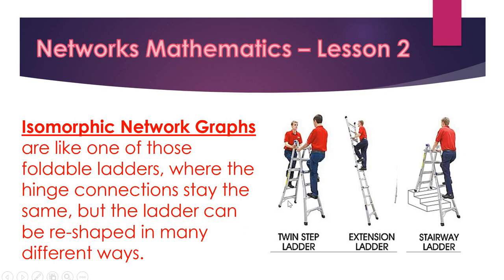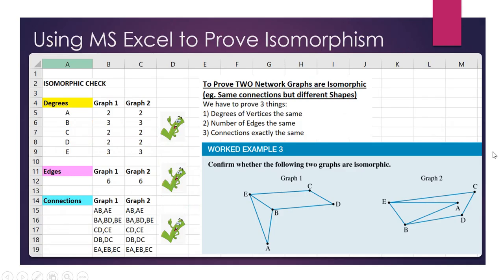Isomorphic graphs are like those foldable ladders you see — you can change the configuration. The hinge points and connections on the ladder all stay the same; you can put it up as a stepladder, flip the top up as an extension ladder, or make one side shorter for stairs. It's still the same ladder with the same connection points — it's just been bent into a different shape. That's what an isomorphic network is: the same network bent into a different shape.